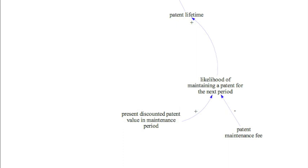For the second variable, however, the story is different. The higher the patent maintenance fee, the lower you would expect the likelihood of maintaining a patent for the next period to be. Thus, we have a negative relationship represented with a minus sign next to the arrow. Now we can ask again, what is it that determines the present discounted patent value in maintenance period and the patent maintenance fee?